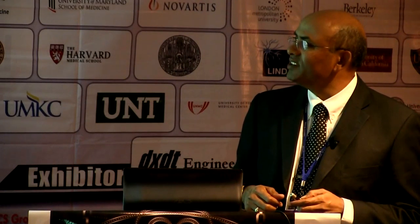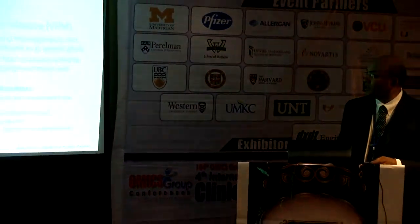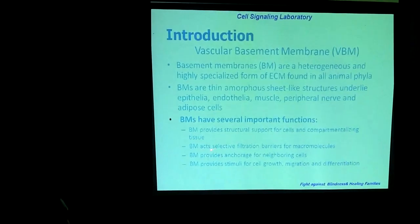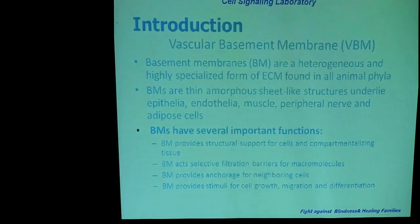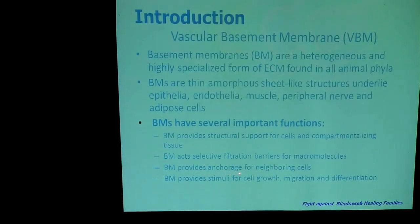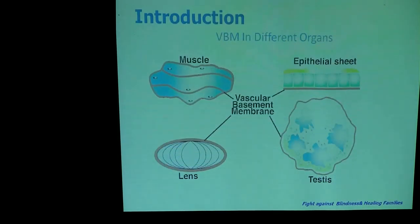The vascular basement membrane is a heterogeneous and highly specialized structure. It is present in each and every tissue. The important structural functions of the basement membrane are to provide structural support for cells and to compartmentalize the tissue. It also has a selective barrier for the filtration of macromolecules and provides support for neighboring cells. Most importantly, it stimulates cell growth, migration, and differentiation. As I mentioned, vascular basement membrane is present in every organ.